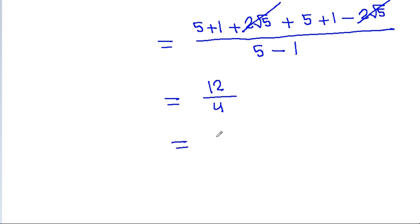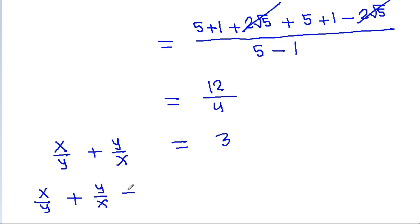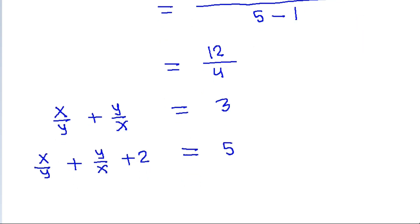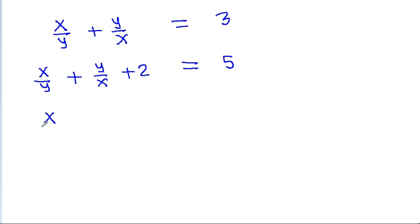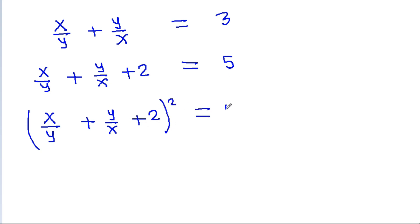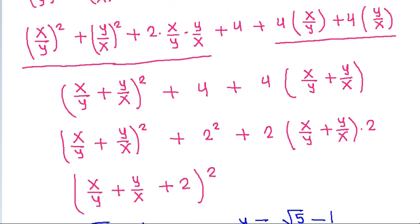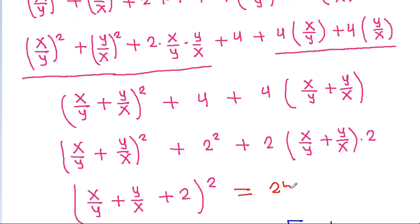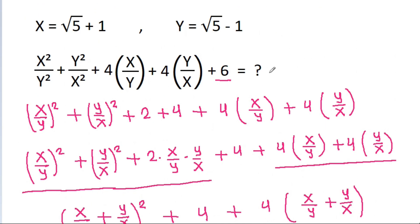So x by y minus y by x is equal to 3, and x by y plus y by x plus 2 equals 3 plus 2, which is 5. Then (x/y + y/x + 2)² equals 5 squared, which is equal to 25. So the final answer is 25.